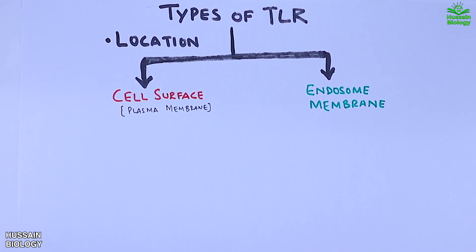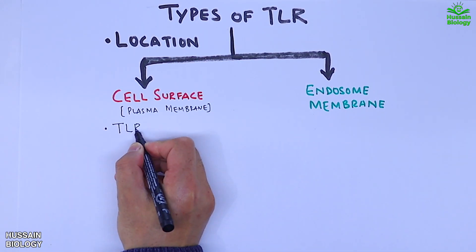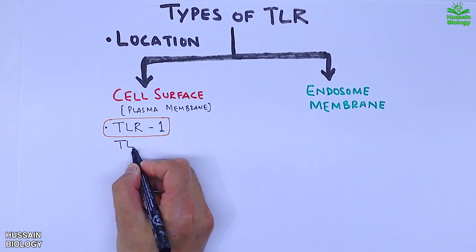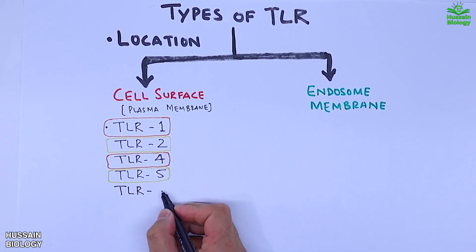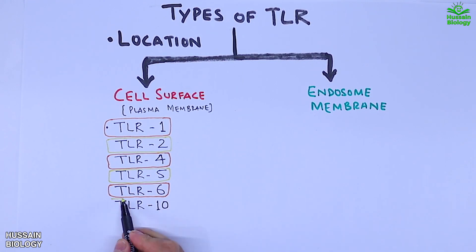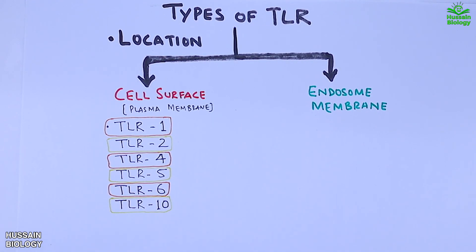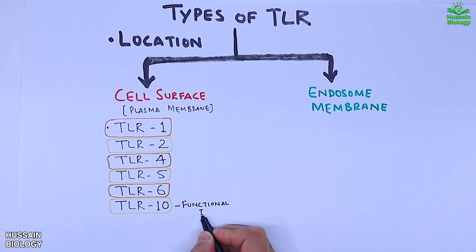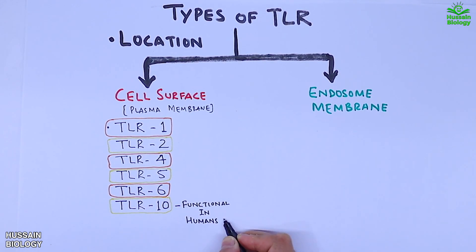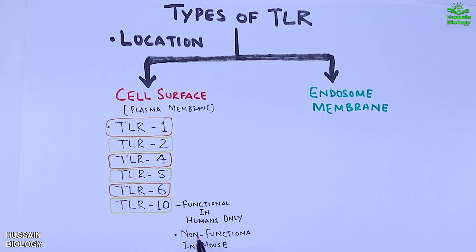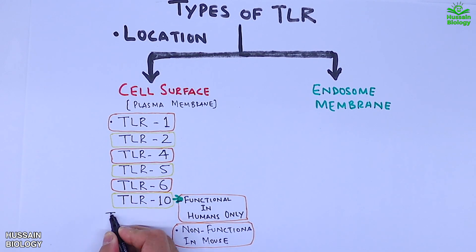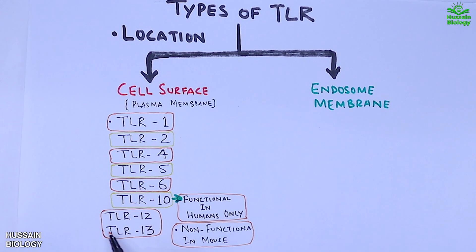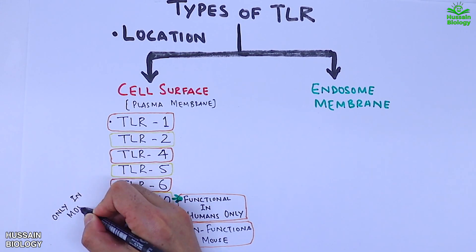In the cell surface TLR group, we have TLR1, TLR2, TLR4, TLR5, TLR6, and TLR10. Note that TLR10 is functional in humans only, whereas it is non-functional in mouse. We also have TLR12 and TLR13, both of which are present in mouse only.